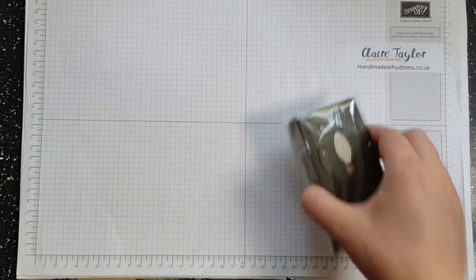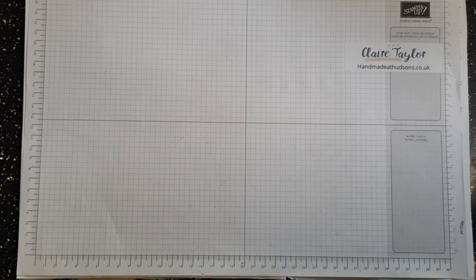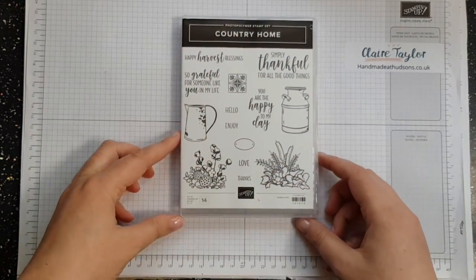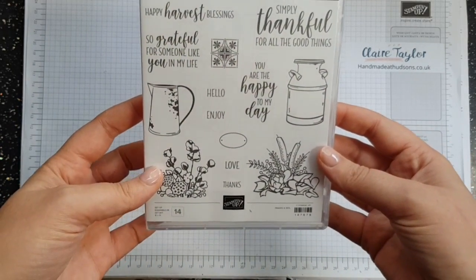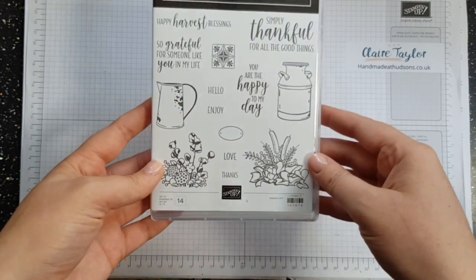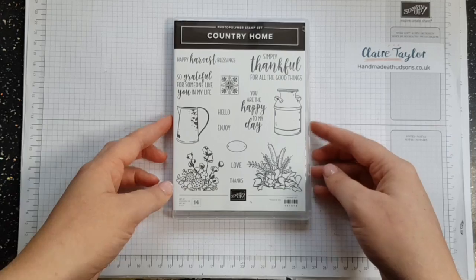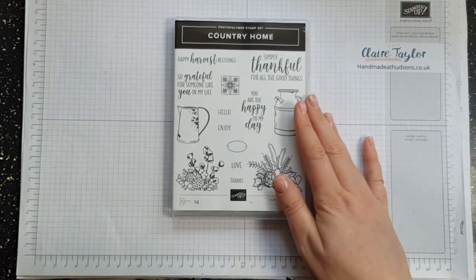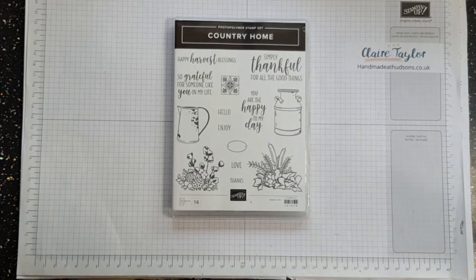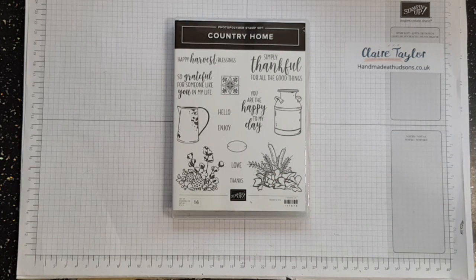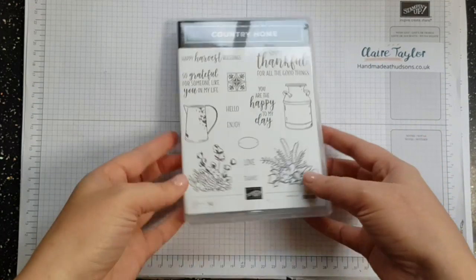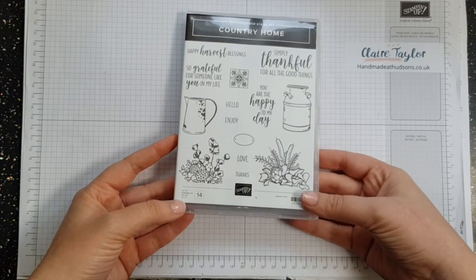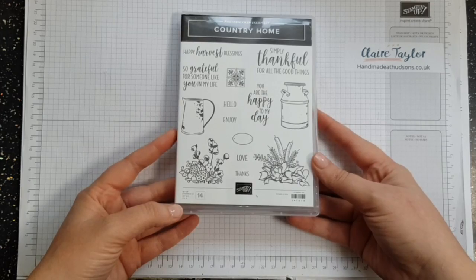So my next stamp is a Country Home stamp. Now I wasn't really sure whether I wanted this or not but then I've seen some amazing examples on Pinterest so yeah this fell into my basket, fell, that's my excuse and I'm stuck to it. So I absolutely adore this, there aren't any dies to go with it but it is still a lovely stamp set. I'm just checking in my catalogue which will be online on the 5th of September or you might have received it in post if you've asked me for one.